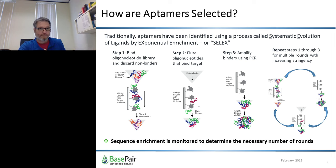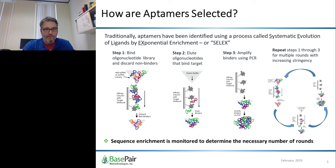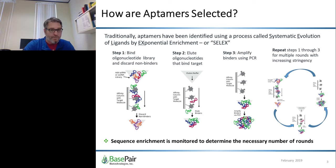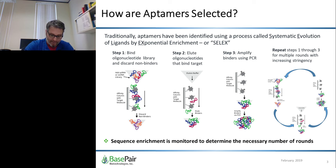So how does one make an aptamer? There are numerous variations, but the basic steps are referred to as SELEX. In step one, one immobilizes the target to a solid support, then binds the aptamer library and washes away the vast majority that are non-binders. In step two, the rare binders are eluted and collected. In step three, the eluted fraction of nucleic acids is amplified by the polymerase chain reaction, or PCR. The entire process is then repeated, typically for 10 to 15 rounds under increasing stringency.